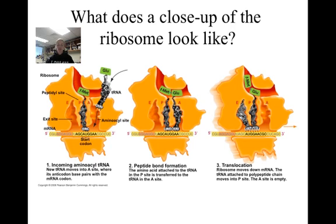Let's take a close-up view of what goes on at a ribosome. Take a look at one of the transfer RNA or tRNA molecules coming into the ribosome. On one end is an amino acid, and on the other end is an anticodon — an area of three nucleotides that are complementary to the codon. Notice that the ribosome has two subunits, a large one and a small one. In the large ribosomal subunit, there are three important sites: the A site, the P site, and the E site. A new tRNA molecule with an attached amino acid enters the A site, or the aminoacyl site, and the anticodon pairs with the codon of the mRNA.